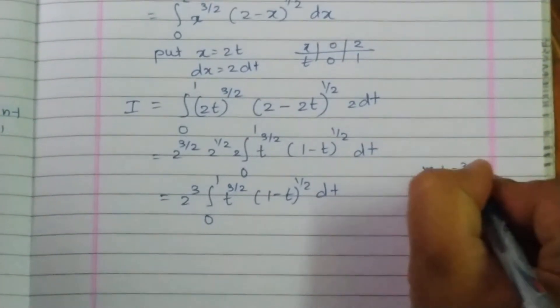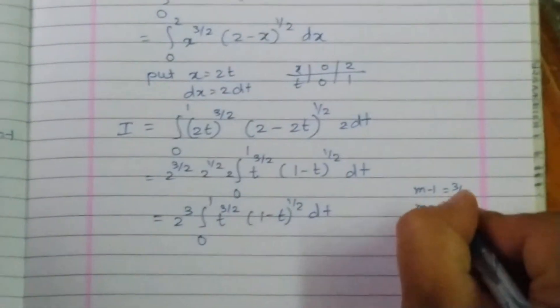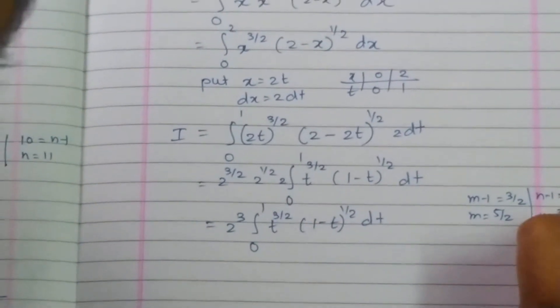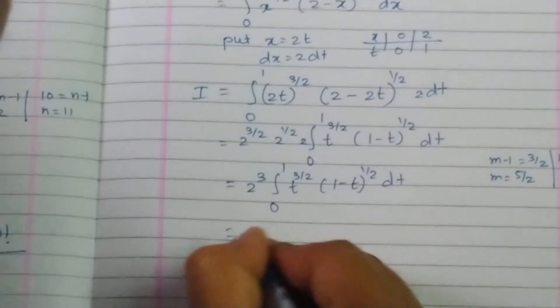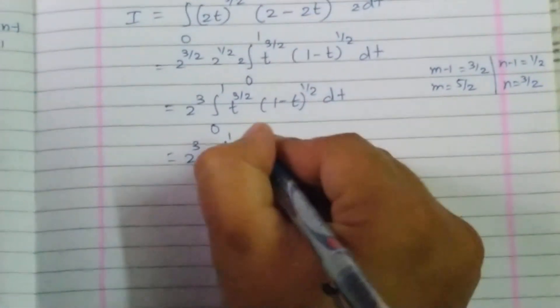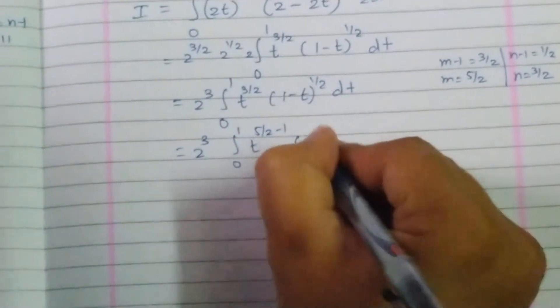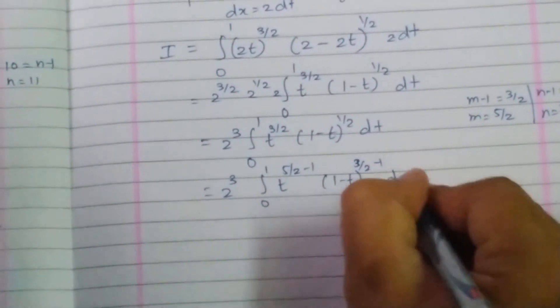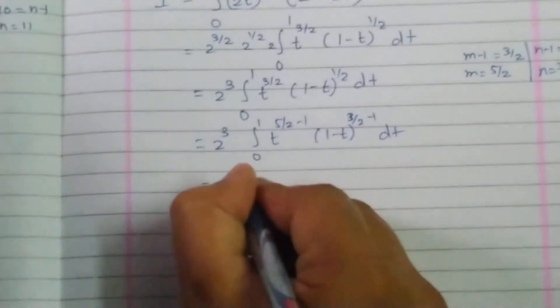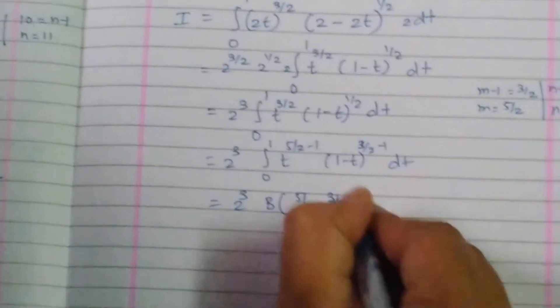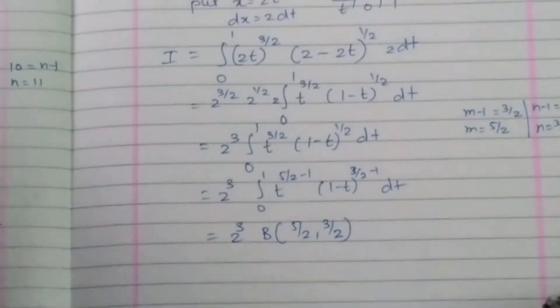So m minus 1 is equal to 3 by 2, therefore m is equal to 5 by 2. n minus 1 is equal to 1 by 2, therefore n is equal to 3 by 2. So 2 cubed, integration from 0 to 1, t raise to 5 by 2 minus 1, times 1 minus t raise to 3 by 2 minus 1, dt. So my answer is 2 cubed times beta of 5 by 2, 3 by 2. The simplification part I would like to leave on your own.